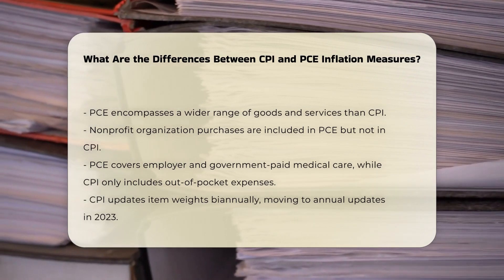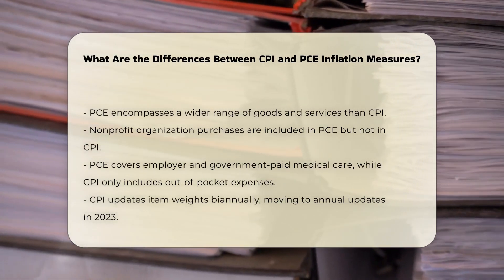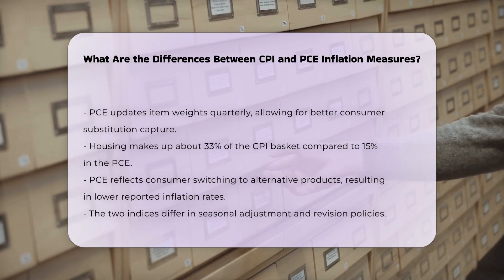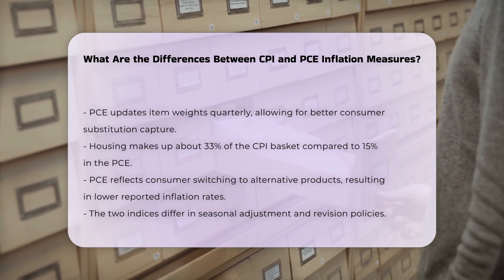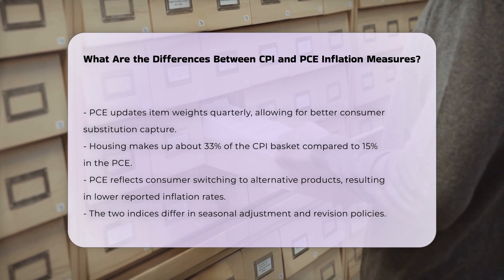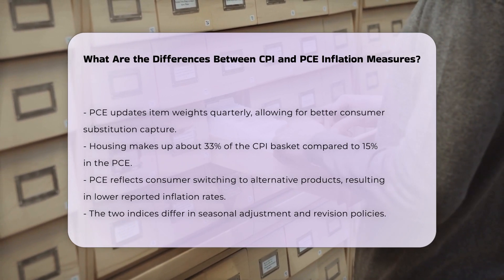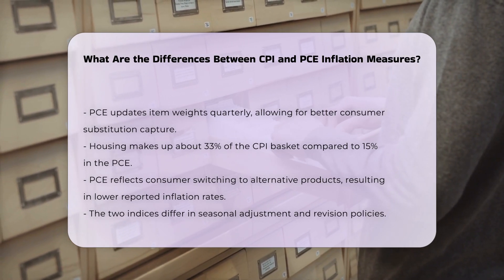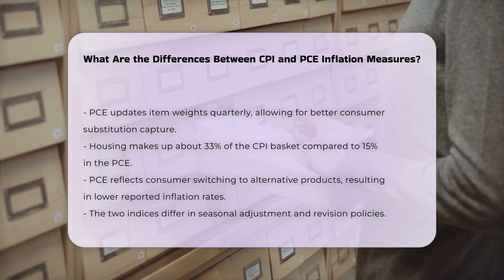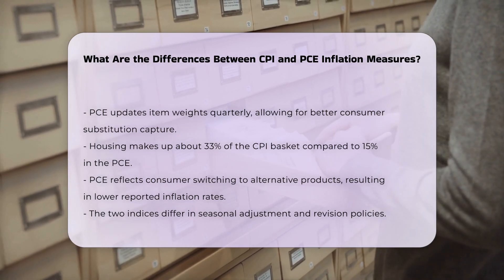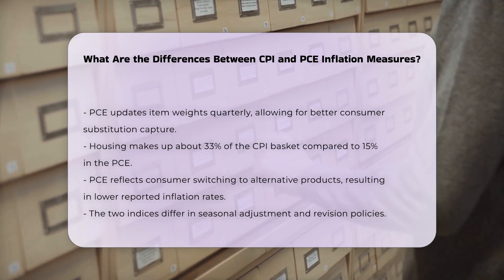Similarly, healthcare spending is weighted more heavily in the PCE than in the CPI. The PCE formula allows for more flexibility in capturing consumer substitution. If the price of a particular item increases, the PCE can reflect consumers switching to alternative products, which can lead to smoother price changes and typically lower reported inflation rates compared to the CPI.